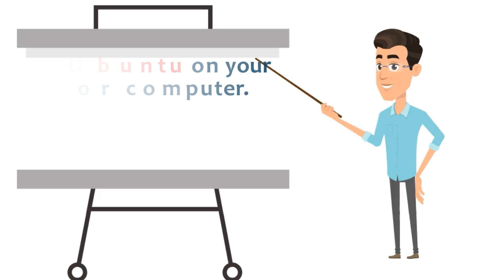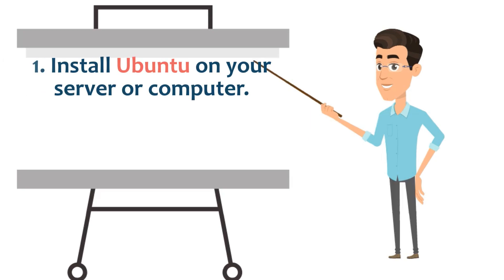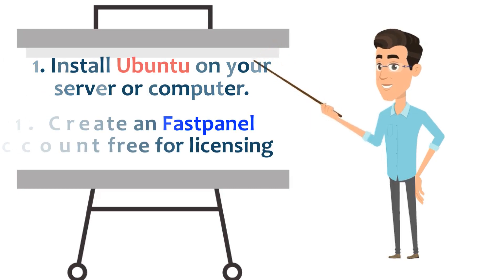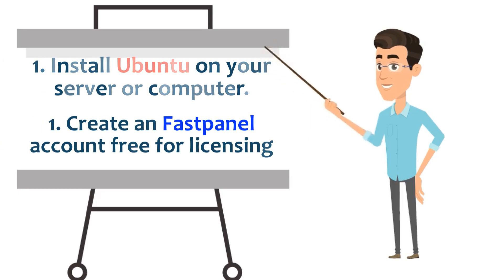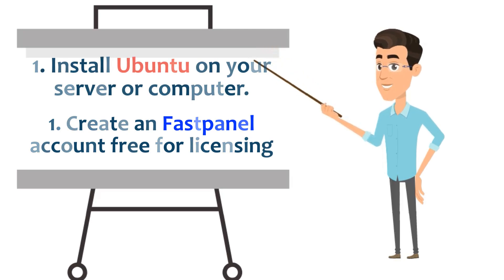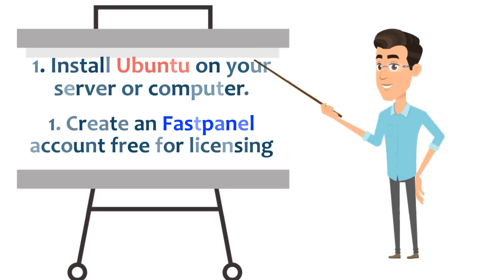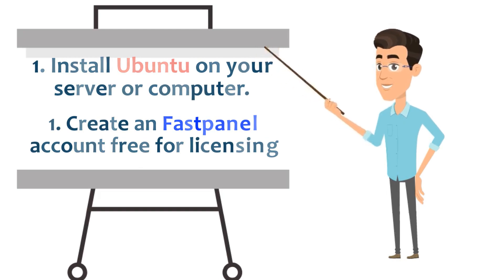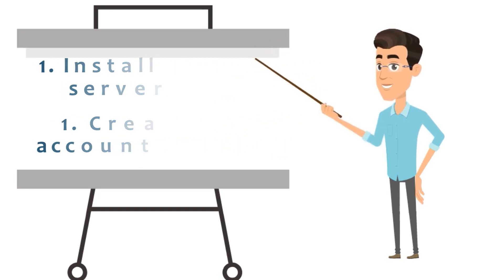First, you need to install Ubuntu on your server or computer. Second, you need to create a free account for Fastpanel licensing. Then you can create a web server with the following simple commands. All commands are shared in the install tutorial link from the description.